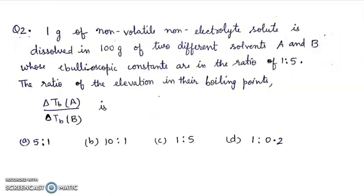Second question: 1 gram of non-volatile non-electrolyte solute is dissolved in 100 gram of two different solvents A and B whose ebullioscopic constants are in the ratio of 1 is to 5. Ratio of the elevation in their boiling points delta Tb A upon delta Tb B is?